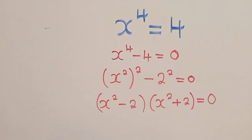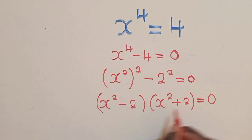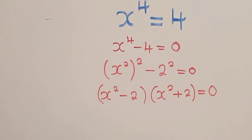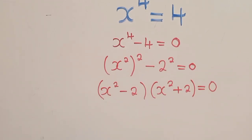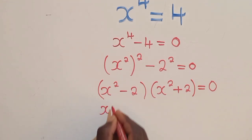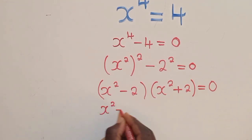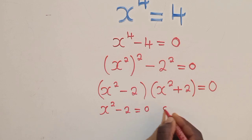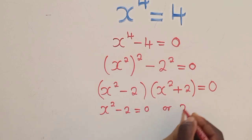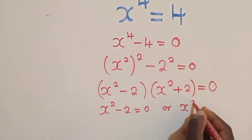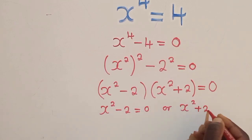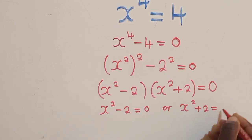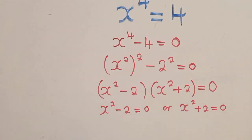We shall have (x² minus a²) times (x² plus a²) equals 0. We've now applied difference of two squares right here. So from this stage we can say x² minus a² equals 0, or x² plus a² also equals 0.